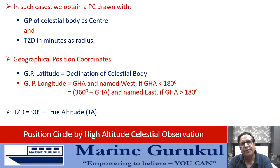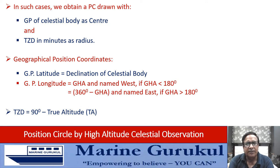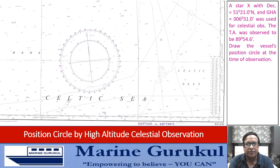TZD, as we all know, is always 90° minus altitude. Now let's see how we draw this circle, taking a small example.